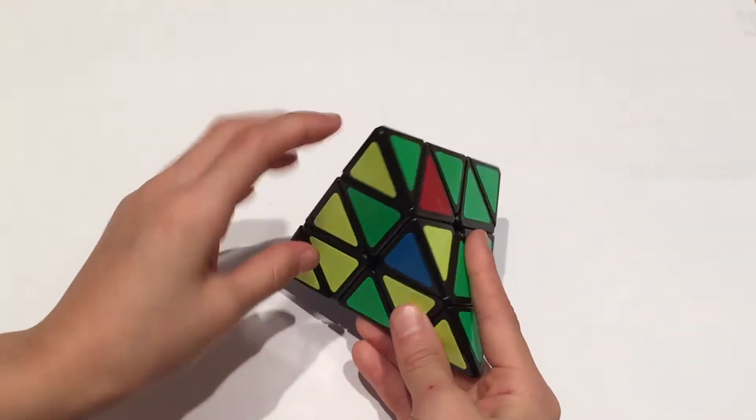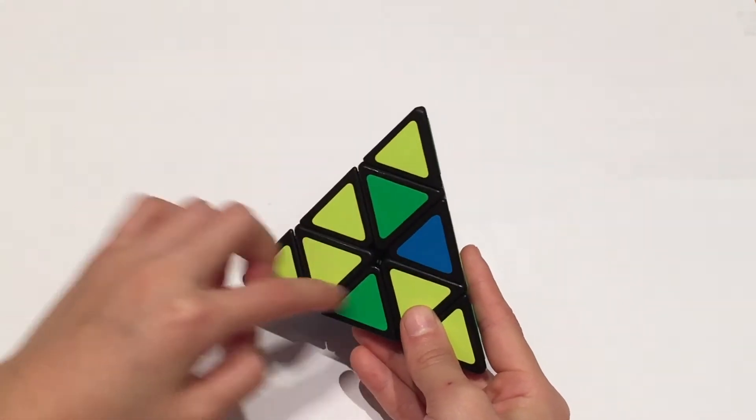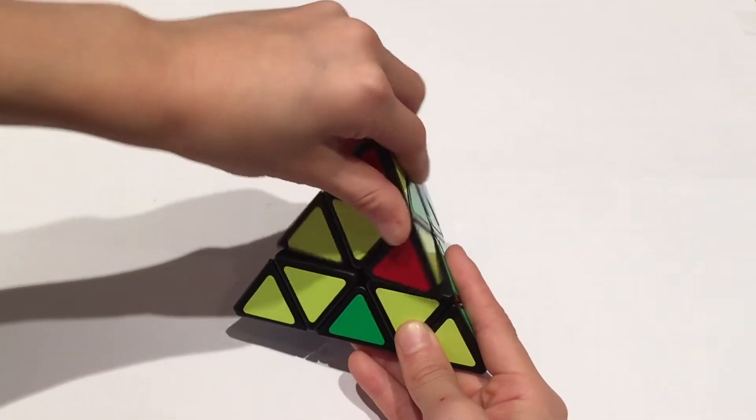And then for the last piece or last edge, we have one with blue and yellow on it. So now blue is already in the area where we have yellow. So now again we move this out of the way.